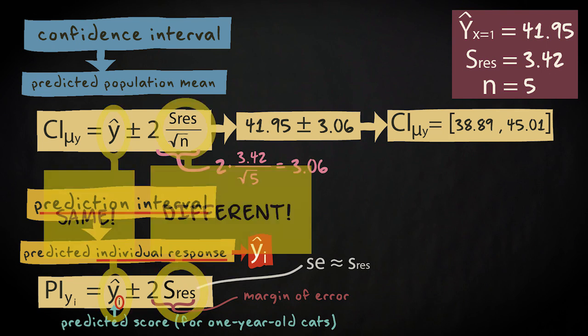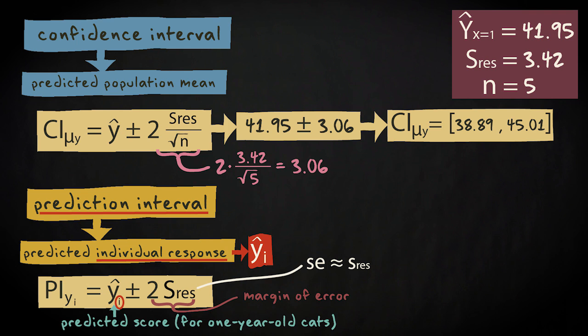For the prediction interval, the standard error is approximately equal to the standard deviation of the residuals. This means that the prediction interval will be wider or less precise than the confidence interval since we're no longer dividing by the square root of n.